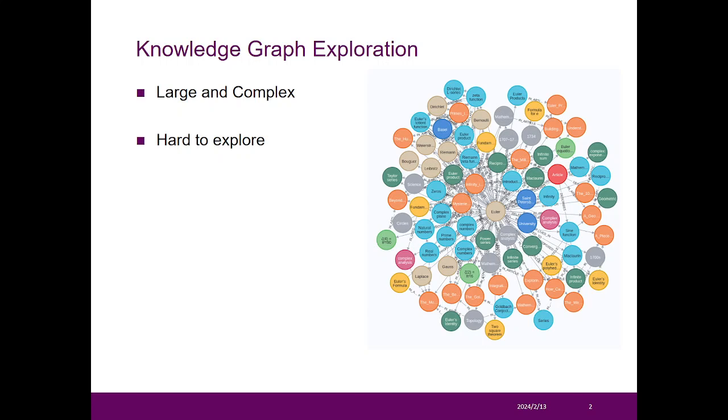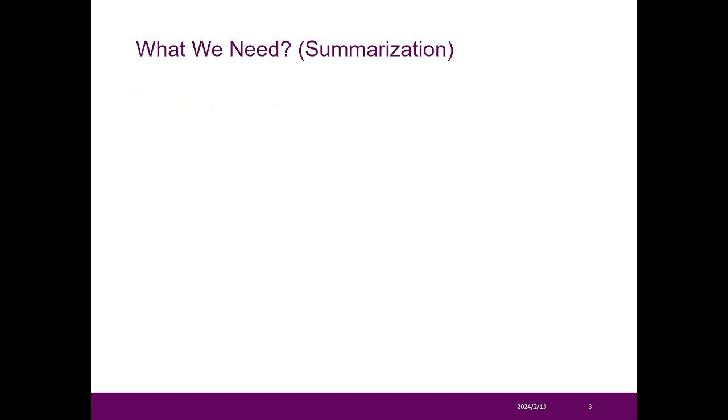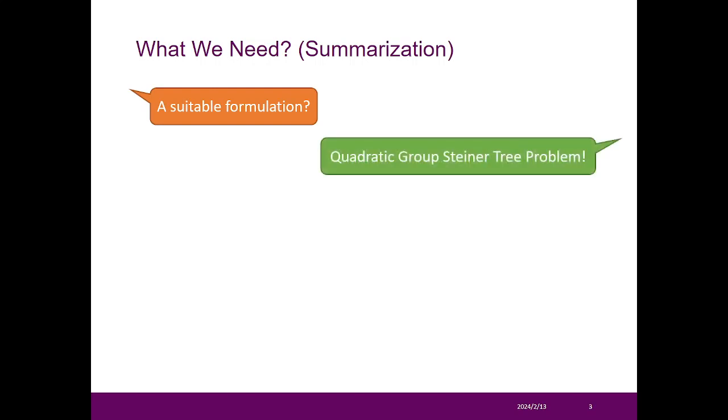As we know, the knowledge graph is a large and complex dataset, so it is hard to explore the content of the knowledge graph. To address the above issue, the exploration task was formulated in many forms. One of the most impressive formulations is the quadratic group Steiner tree problem.